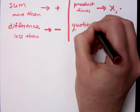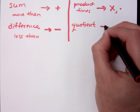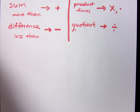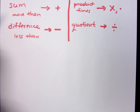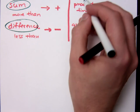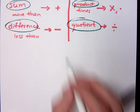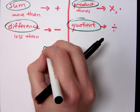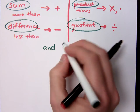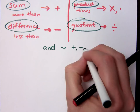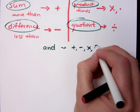If I see the word 'quotient,' what am I talking about? Division. Now, you're going to see that with these main four words — sum, difference, product, and quotient — you will also see the word 'and' that goes along with them. 'And' is going to be tied to using one of these four main operators.